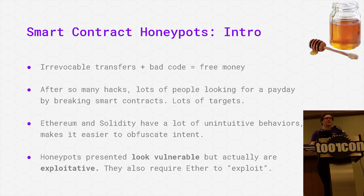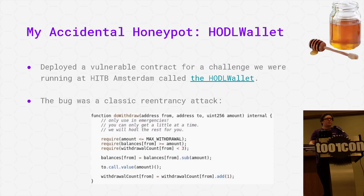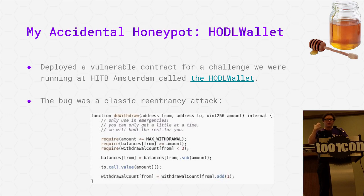Some enterprising individuals figured out that maybe they could trick attackers into giving them money when they think they're going to get a huge payday. These honeypots, without fail, require you to send Ether into the contract. They look like they're vulnerable to some of these common flaws, but they're actually trying to exploit the people exploiting them. I got interested in this because I wrote a smart contract challenge for Hack in the Box — it was a classic re-entry bug, but people weren't actually able to exploit it unless they had a private key that I gave them.